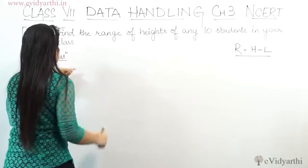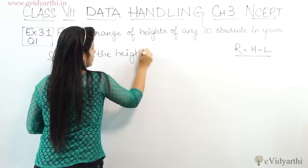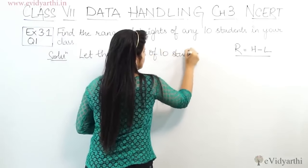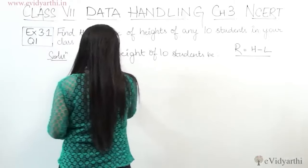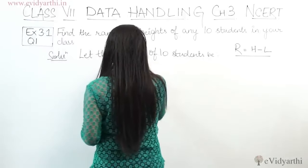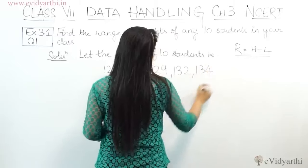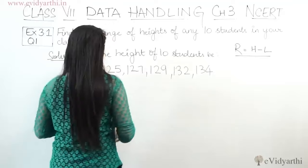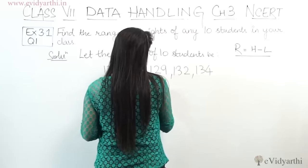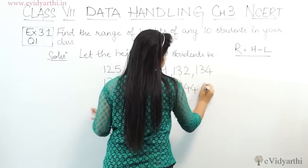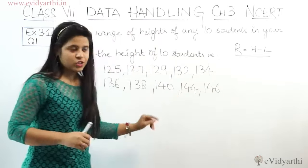I assume here the heights of 10 students. You can take any random values. I start from 125, then 127, 129, 132, 134 — that's 5. I need 5 more, so I take 136, 138, 140, 144, 146. So here we have a total of 10 observations.